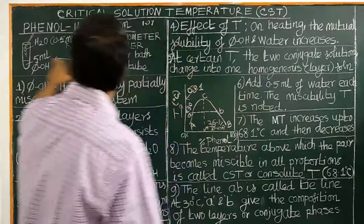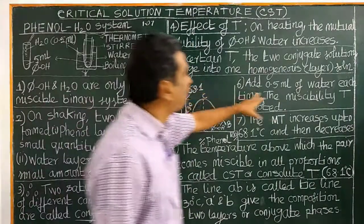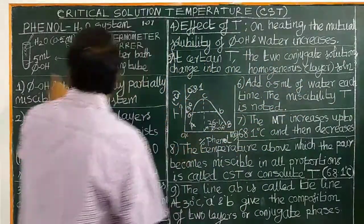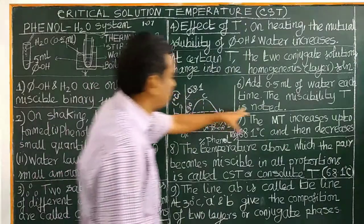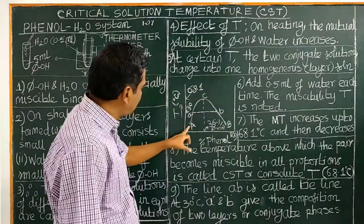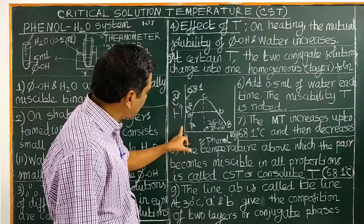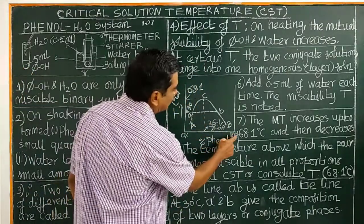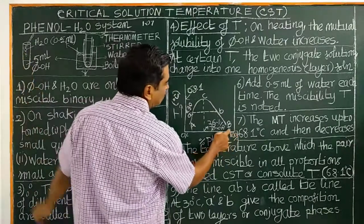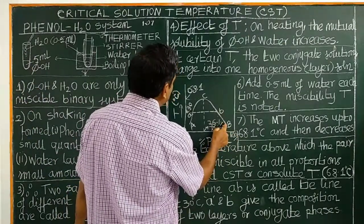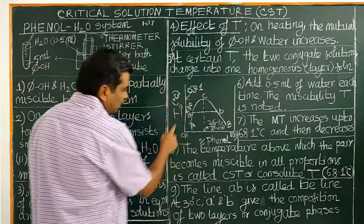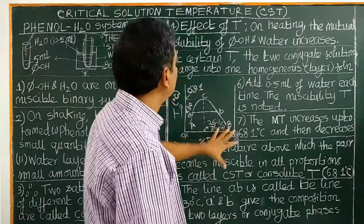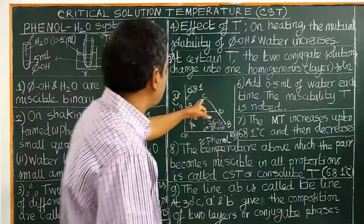Add phenol first — 5 ml of phenol — then add 0.5 ml of water each time. The miscibility temperature is recorded. Starting from 0% phenol (100% water) and going up to 100% phenol, each time 0.5 ml of water is added and the miscibility temperature is noted.